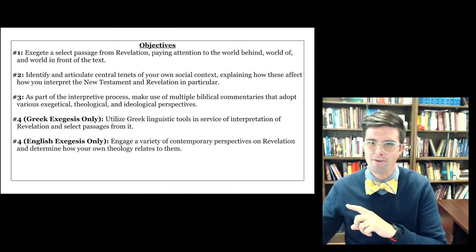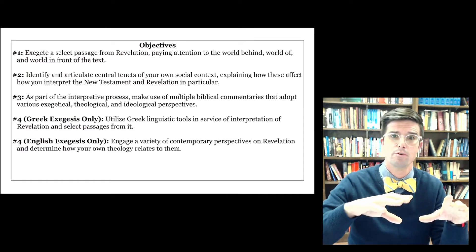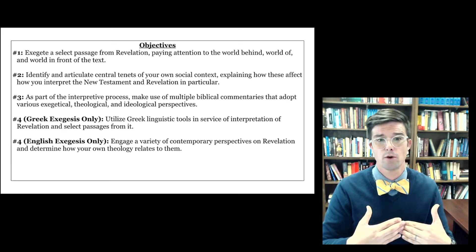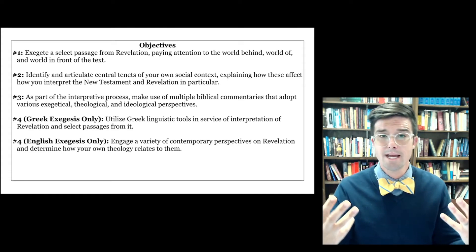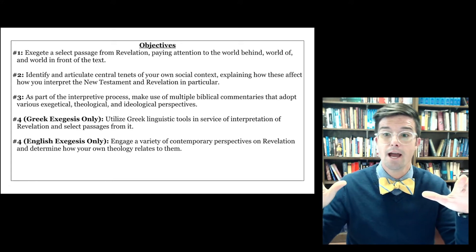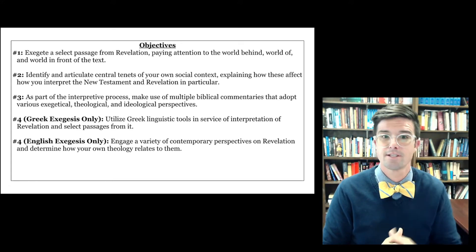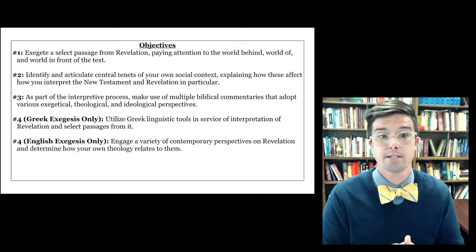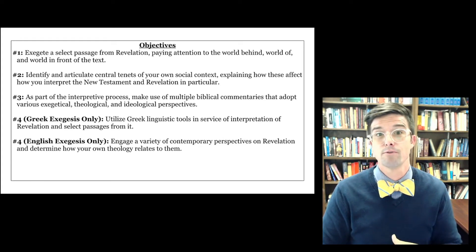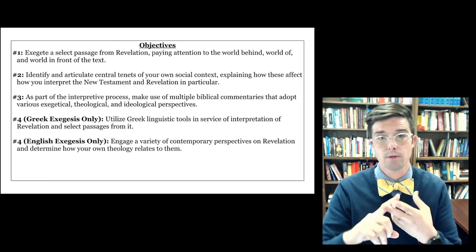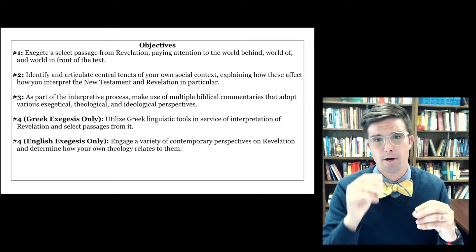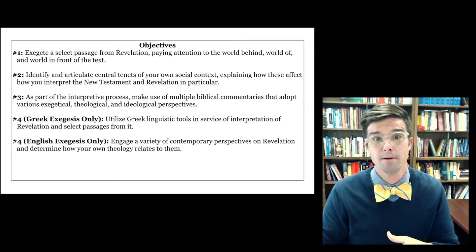Now let's move on to our objectives and look at elements of the syllabus itself. We have three objectives that are shared between the two versions of the course — the English exegesis version and the Greek exegesis version. For you, English exegesis students, those first three objectives plus the last one — we might call it 4B — are the objectives for you. Everything in this course, from readings to assignments to discussion forums, is aimed at accomplishing these objectives, and I've put them in order of importance.